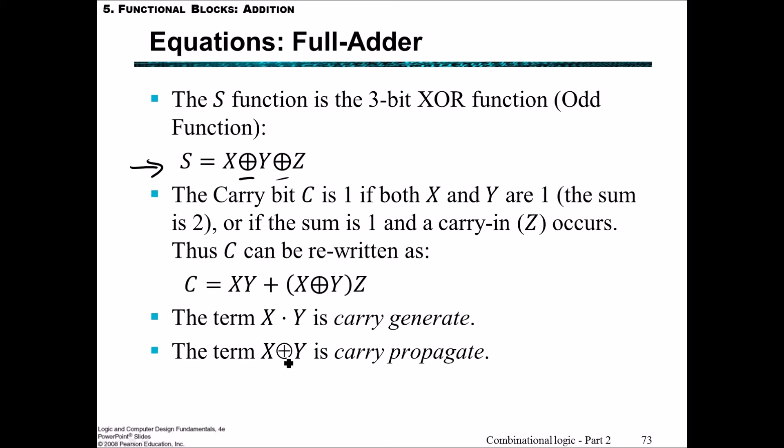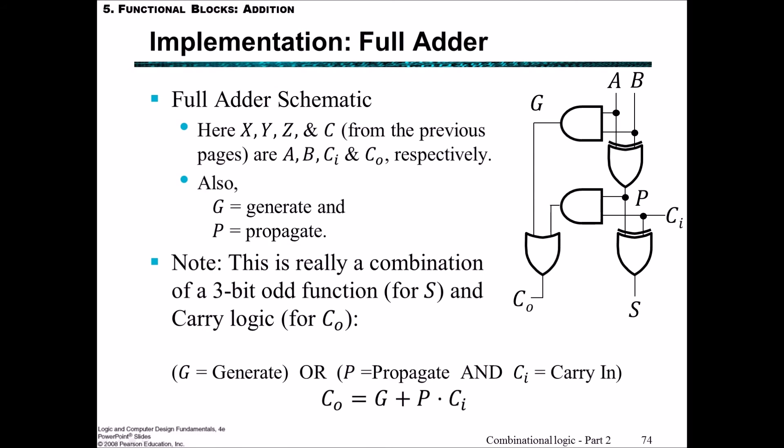Here's the full-adder schematic. We're going to substitute some nomenclature: we'll use variables A and B as inputs instead of X and Y, Z being the carry-in is now CI (carry-in), and C which is the carry-out is CO. From the previous slide, we had the carry generate, which we'll call G output here, and the carry propagate.